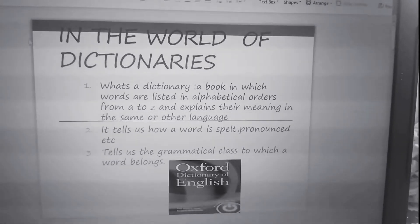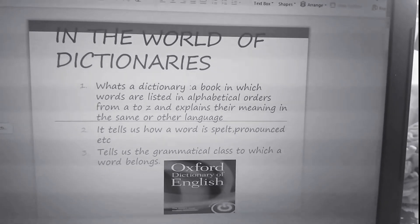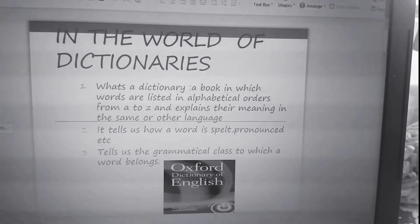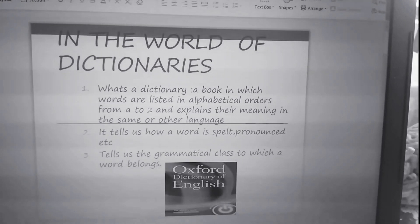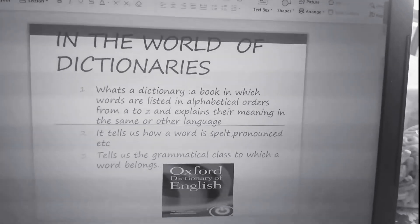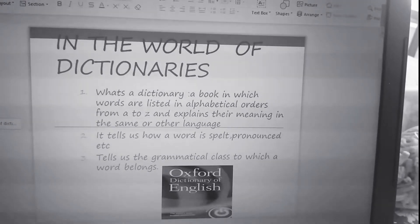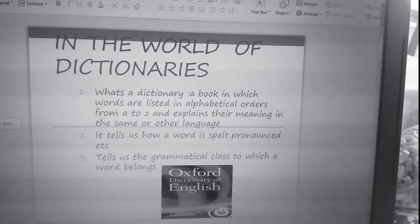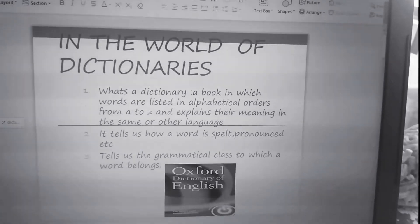What's a dictionary? A book in which words are listed in alphabetical order from A to Z and explains their meanings in the same or other language. It tells us how a word is spelled or pronounced and tells us the grammatical class to which a word belongs.